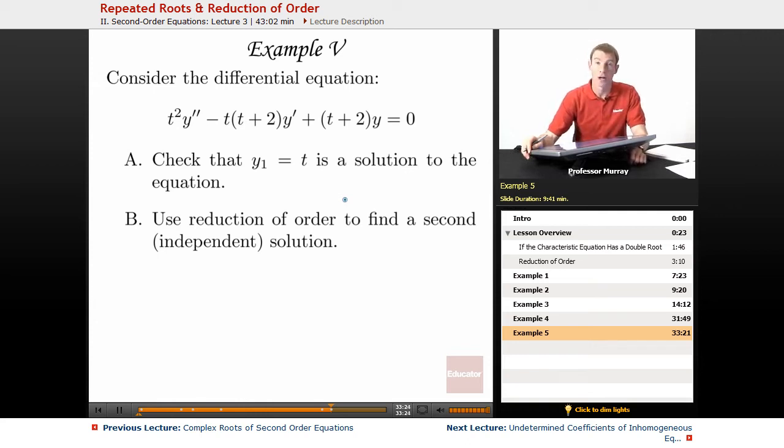In example 5, we have a more complicated differential equation: t squared y double prime minus t times t plus 2 y prime plus t plus 2 y equals 0.